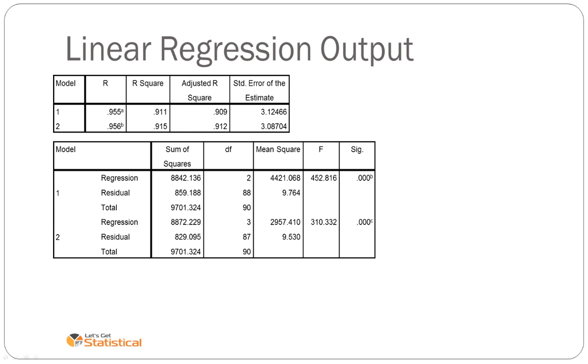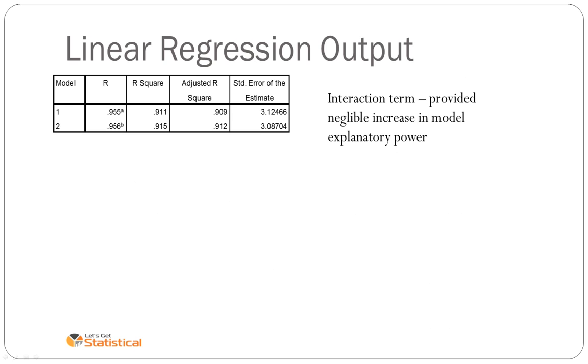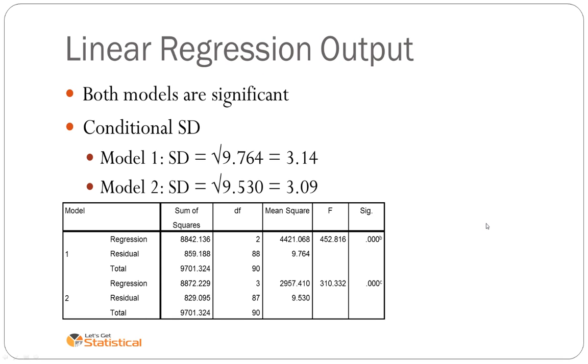Likewise we would comment on these bivariate statistics the same as in multiple linear regression. The linear regression table output will come slightly differently. Model 1 refers to the additive model, Model 2 refers to the interaction model. As you can see there is a negligible gain from Model 1 to Model 2 in R squared. It is just an increase of 0.4%. This is the coefficients table, Model 1 being the additive model, Model 2 being the interaction model. The interaction term provided a negligible increase in explanatory power. Both models, however, are significant. They have both got a p-value of less than 0.05.